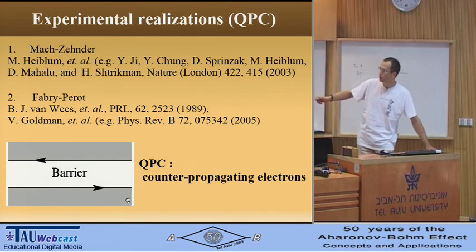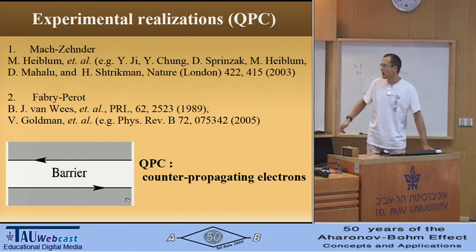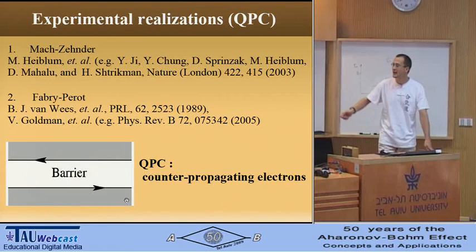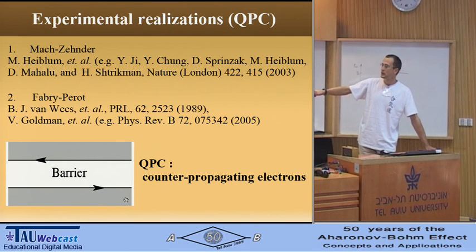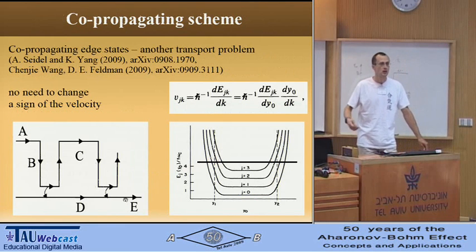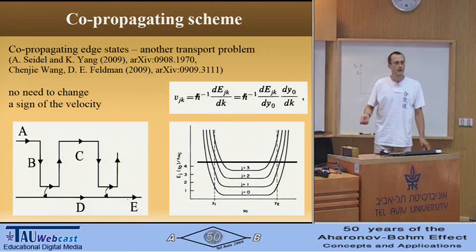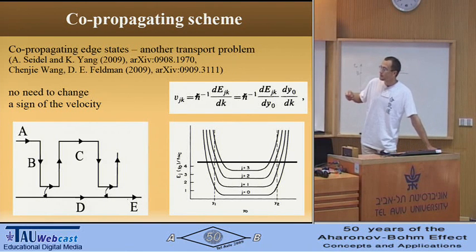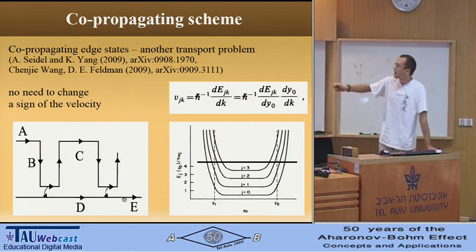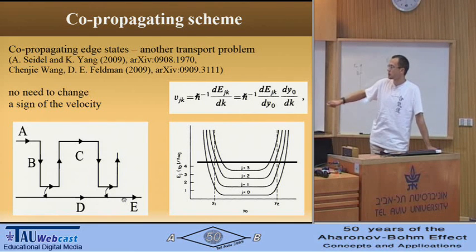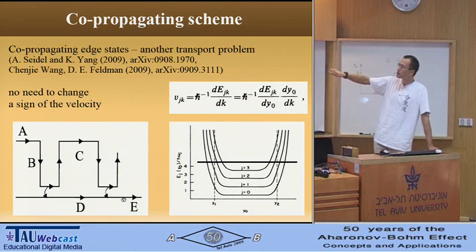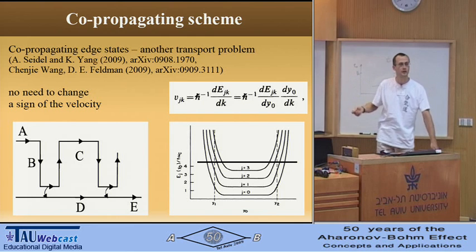In the quantum point contact, two edge states are counter-propagating near each other. They originate from different sample edges and are so counter-propagating. Electron transfer occurs between these counter-propagating edge states. My question is: is it possible to realize an interferometer device for co-propagating edge states?